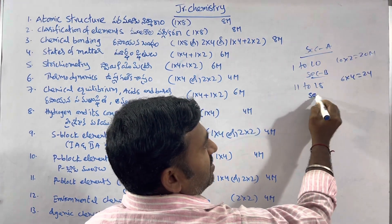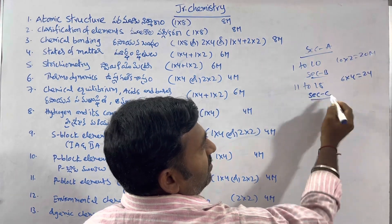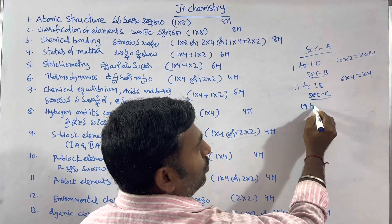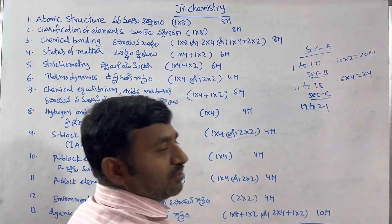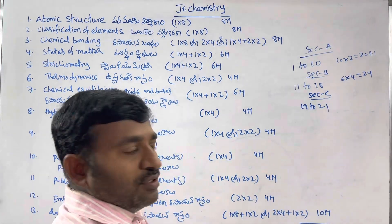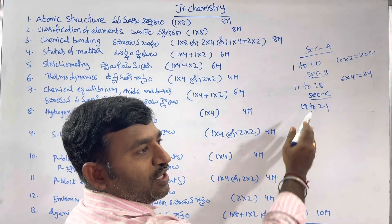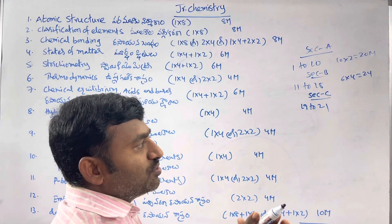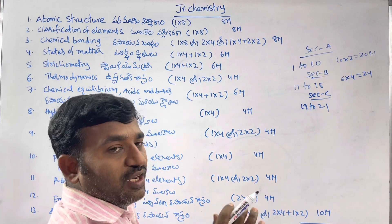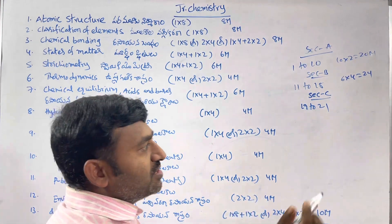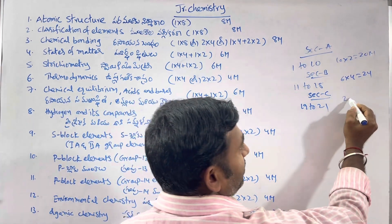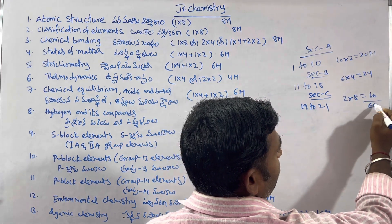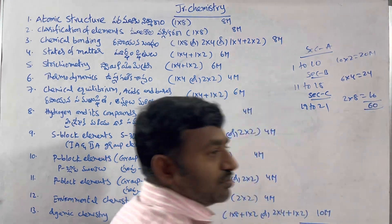Next, Section C: questions 19 to 21 — 3 questions, you have to write only 2 questions. These are LAQs. 2 × 8 = 16 marks. Total: 60 marks.